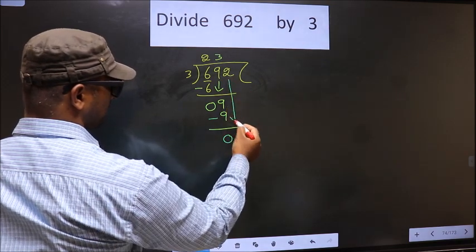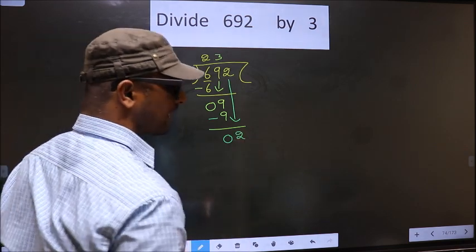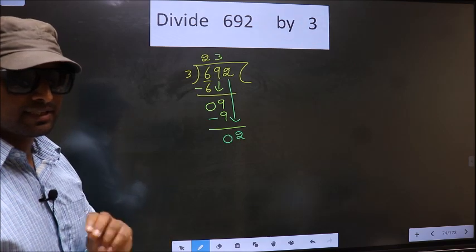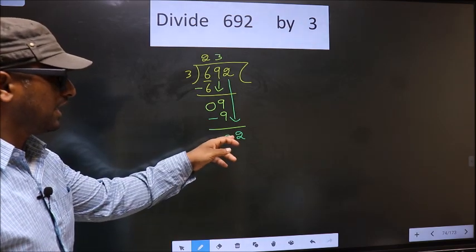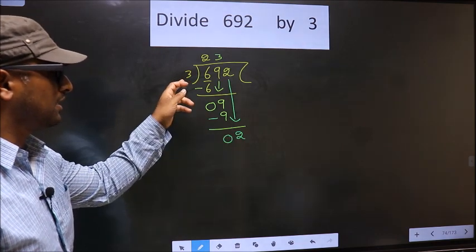Now, you bring down the beside number that is 2 down. This is where the mistake happens. And the mistake is this. Here we have 2. And here 3.